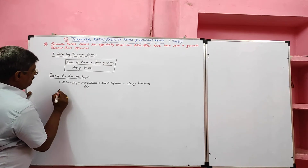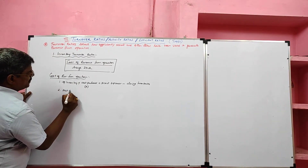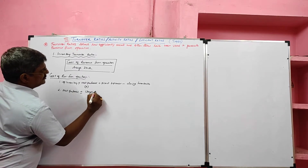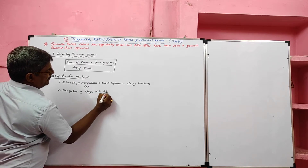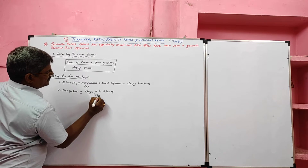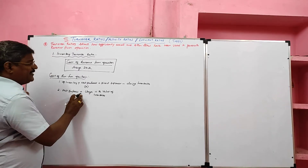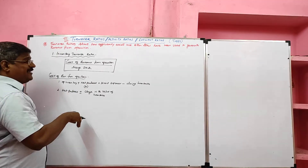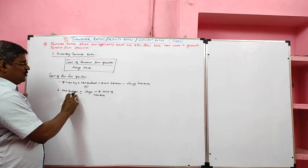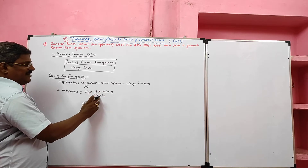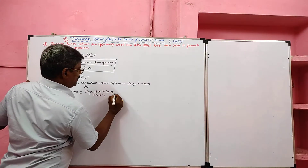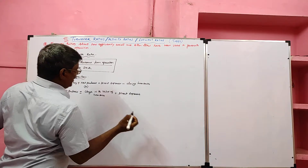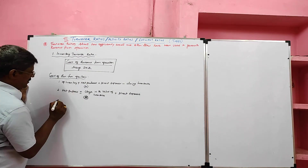Or we can use formula number two: net purchase plus or minus change in the value of inventories. Here, if opening stock exceeds closing stock we have to add; if opening stock is less than closing stock, we have to deduct. So we should be careful here: net purchase plus or minus change in the value of inventory, plus direct expenses.